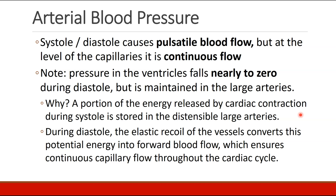But in the large arteries, pressure does not fall to zero during diastole. A typical blood pressure is like 120 over 80. How do we maintain high pressures during diastole? A portion of the energy released by cardiac contraction during systole is stored in these distensible elastic large arteries. During diastole, the elastic recoil of the vessels converts that potential energy into forward blood flow, ensuring continuous capillary flow throughout the cardiac cycle.